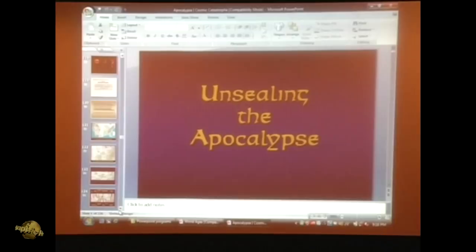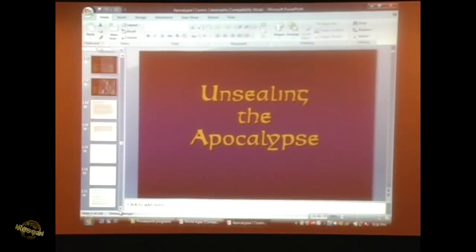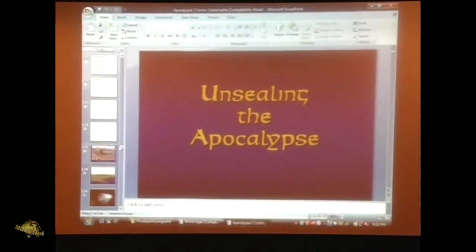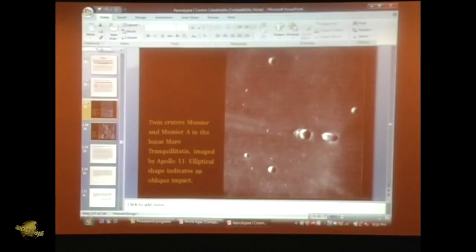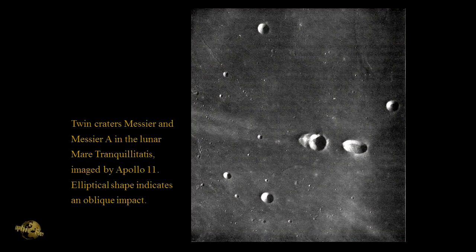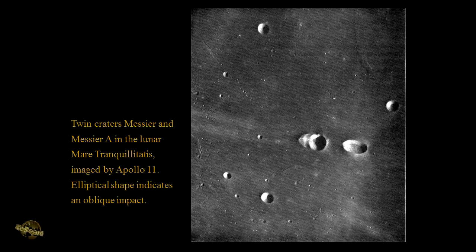Have you seen the pictures of the bays? Good. Before we look at the bays, let's look at some regular craters. Here is an example of an elliptical crater. The elliptical shape indicates an oblique impact - an impact that comes in at a low angle. If it's coming in at a steep angle, it creates a circle. But if it comes in at a low angle, it creates an ellipse rather than a circle.